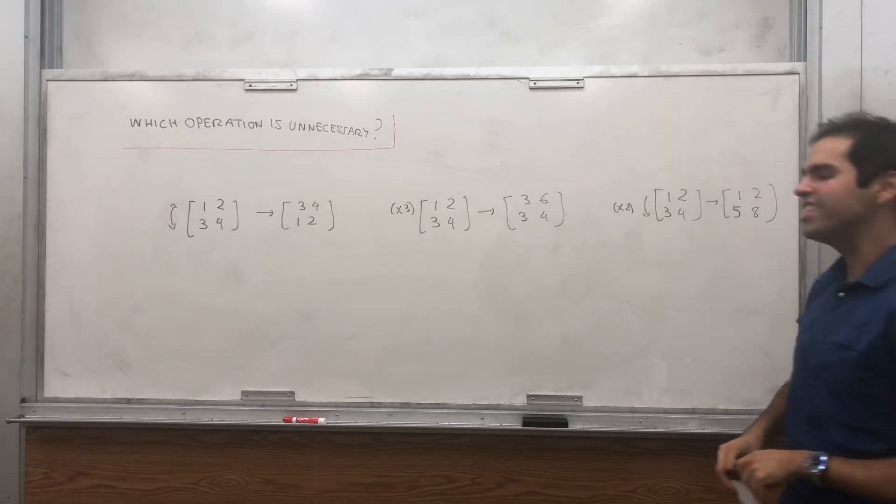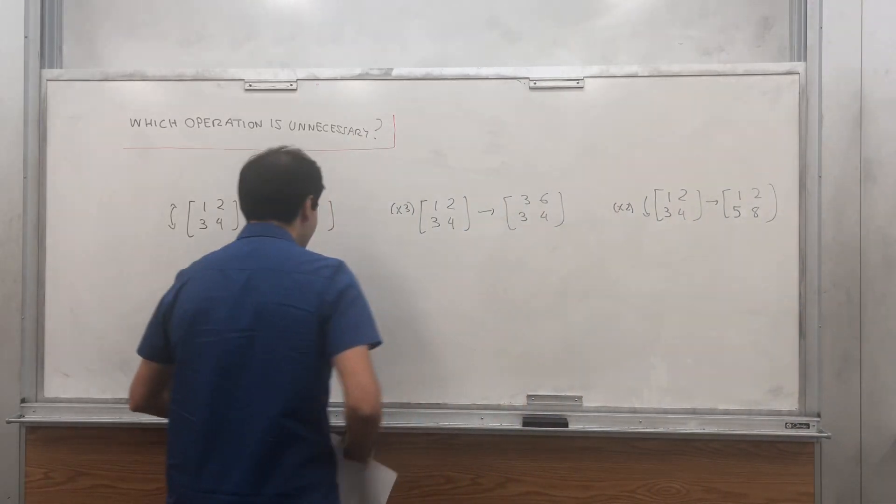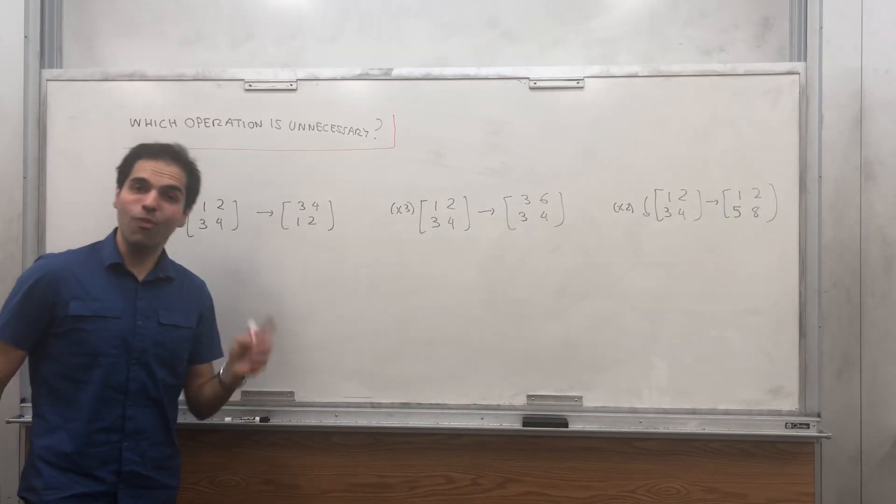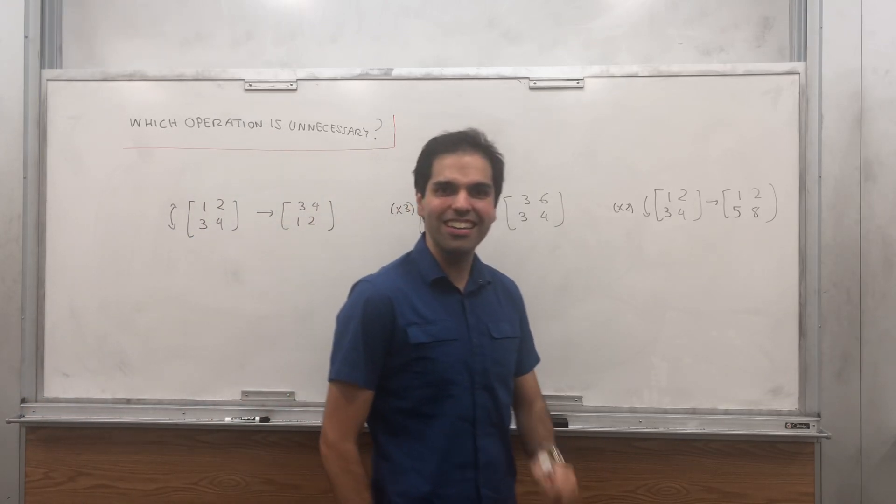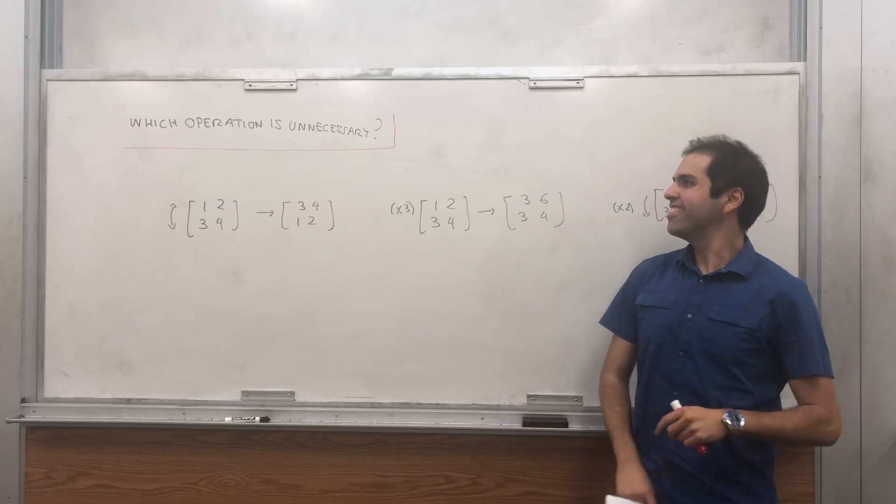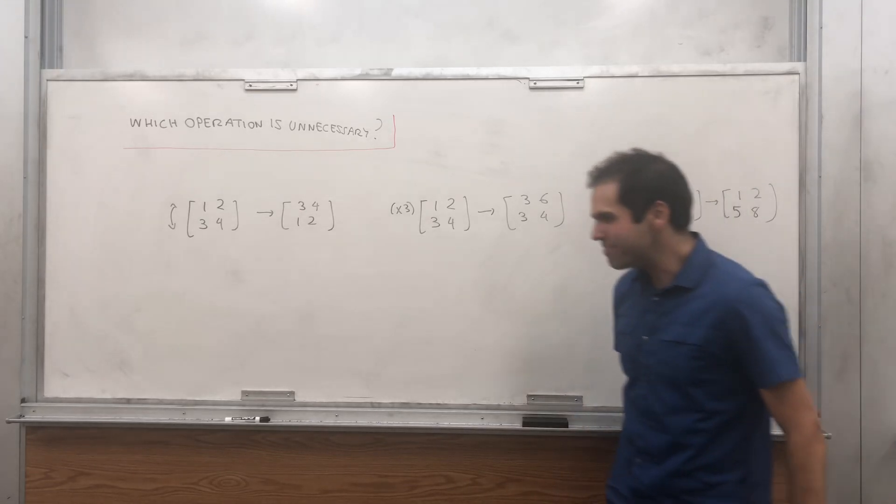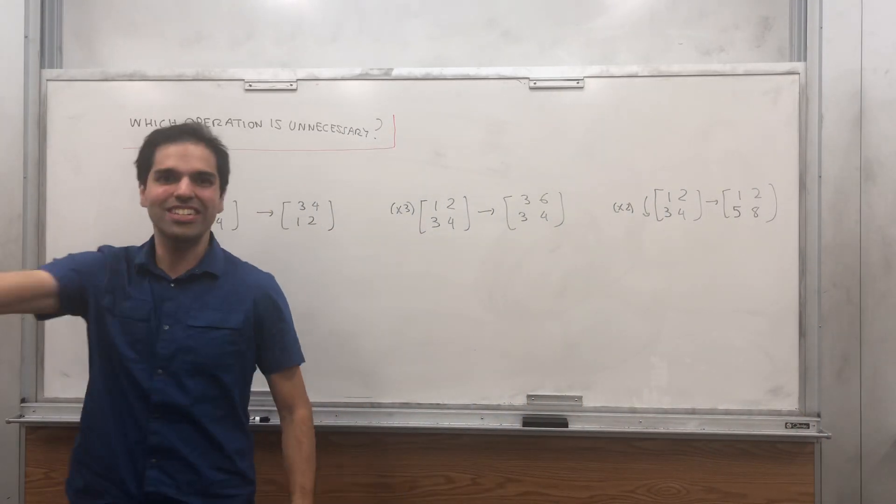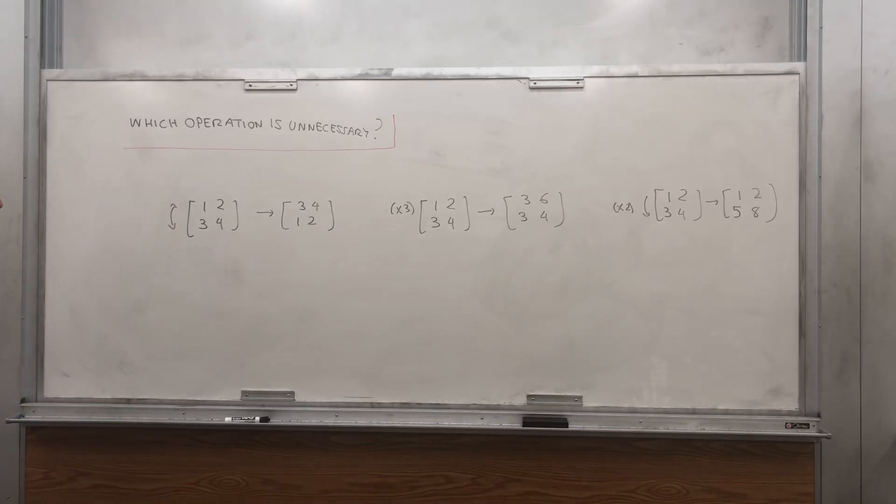So you have those three different row operations, but it turns out one of them is completely unnecessary. Can you guess which one? Well, let me give you a little time to think. Insert Jeopardy music here or something.